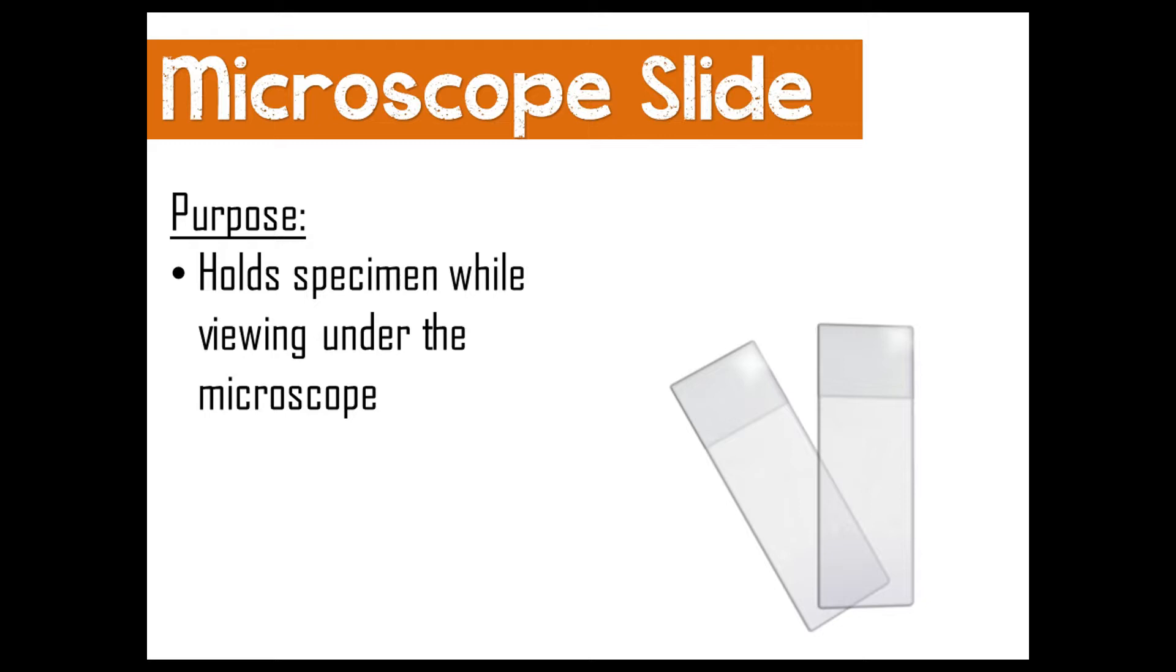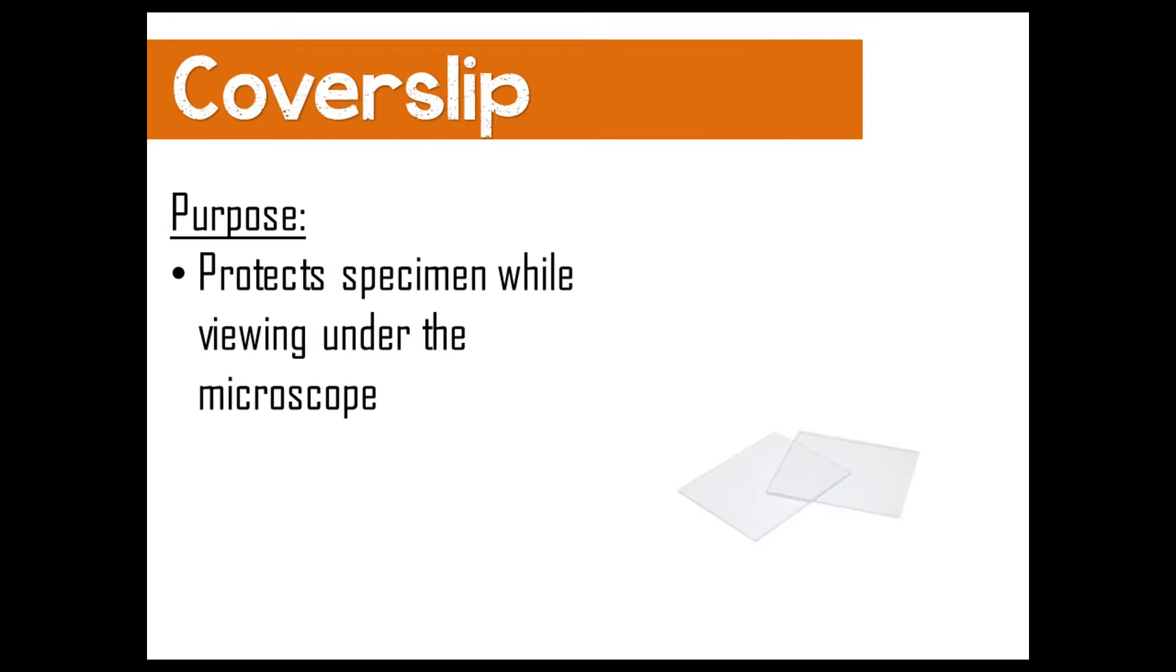Because we're going to be using the microscope this year, you'll also need to recognize the microscope slide, which is a rectangular clear piece. Sometimes they're made of plastic and sometimes they're made of glass, but they hold specimens for viewing under the microscope. You also have a square clear piece, again sometimes made of plastic, sometimes made of glass, called the cover slip, and that protects the specimen for use under the microscope.